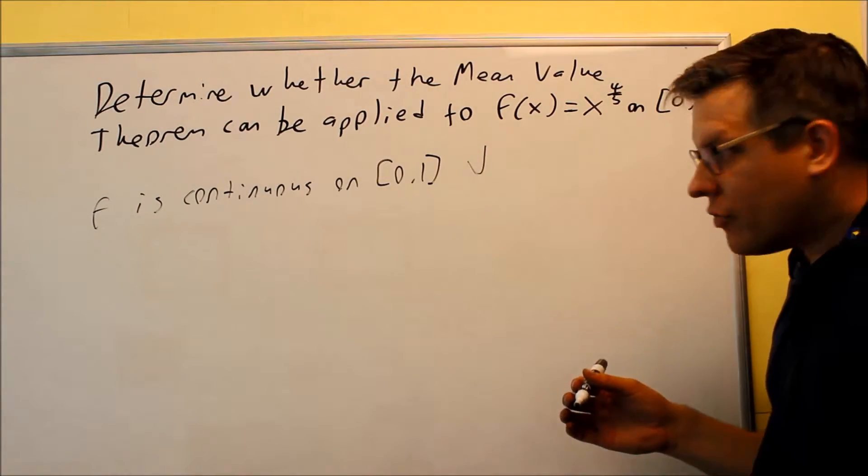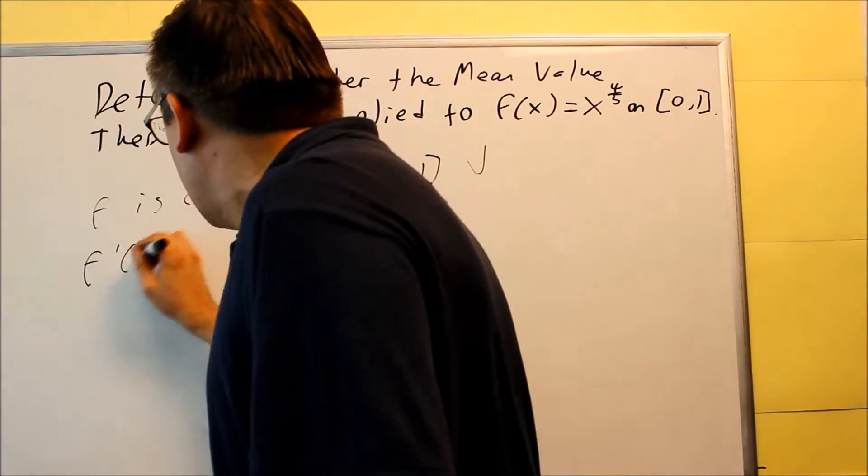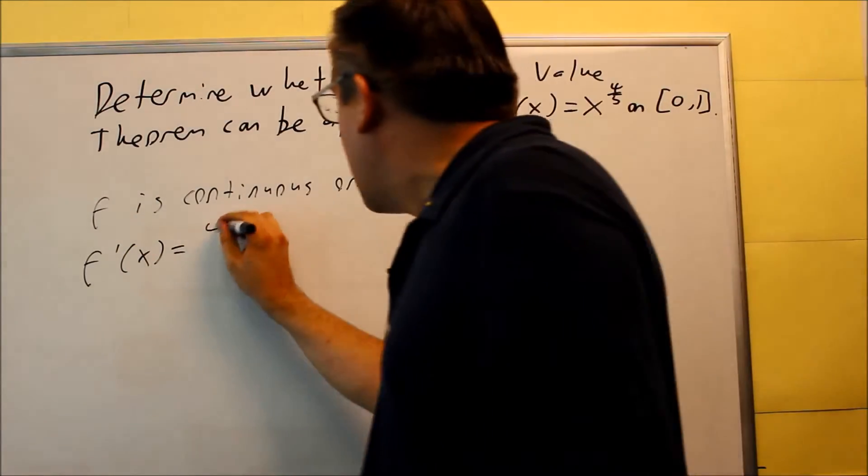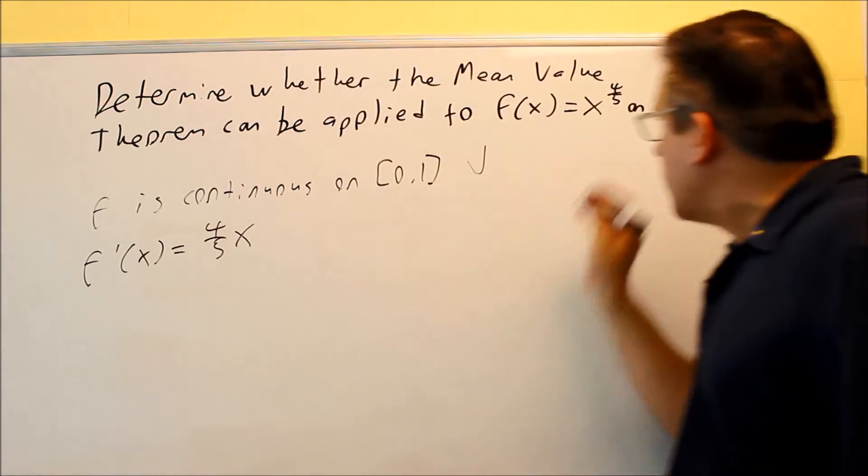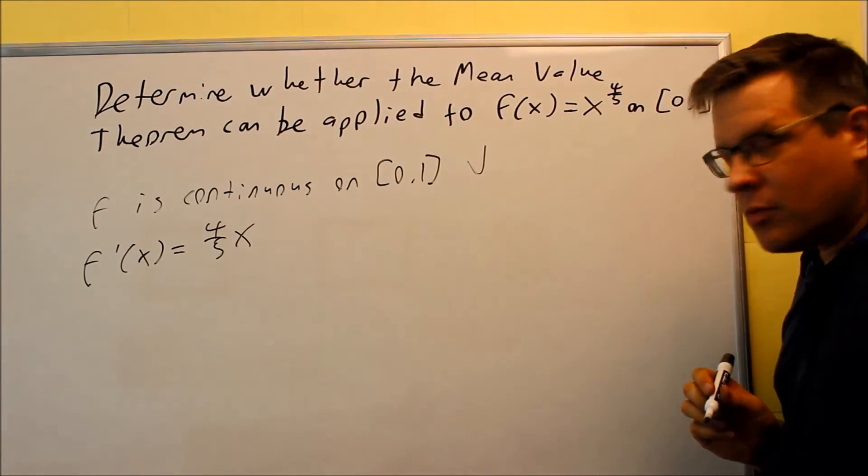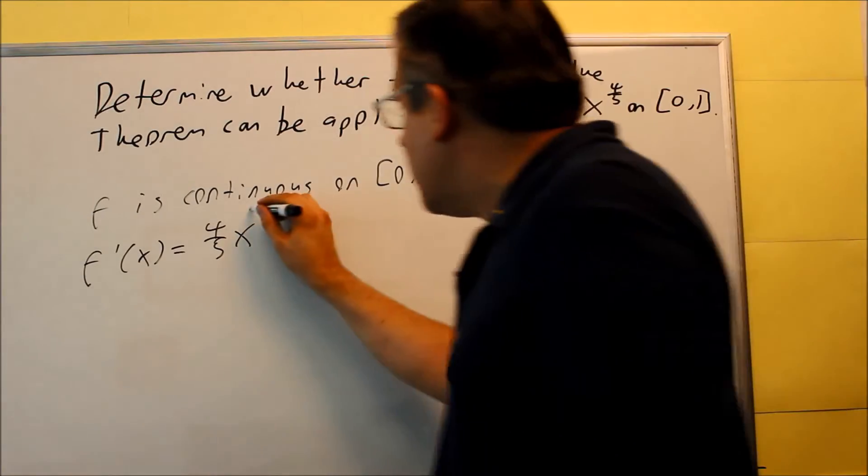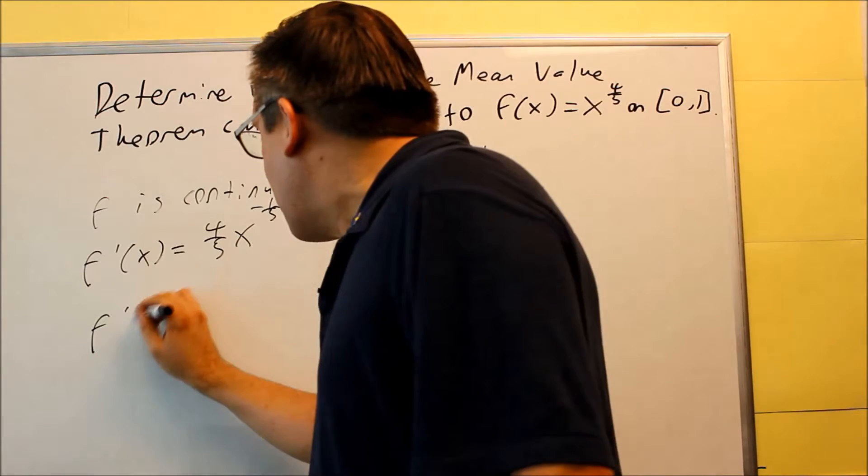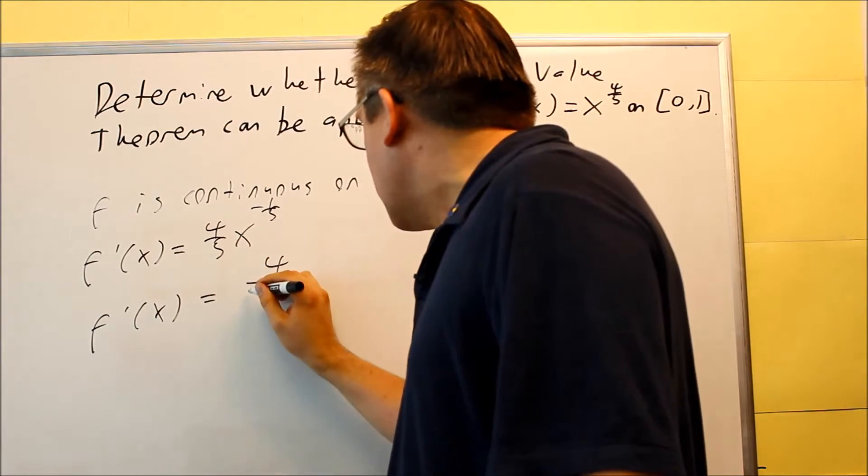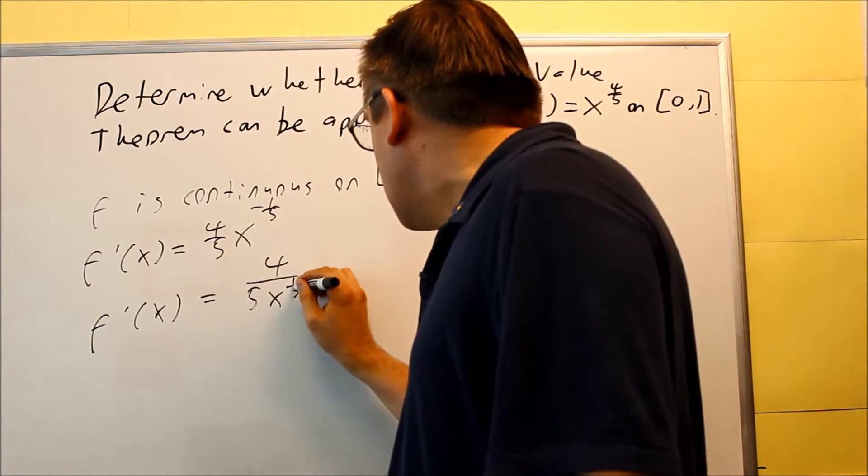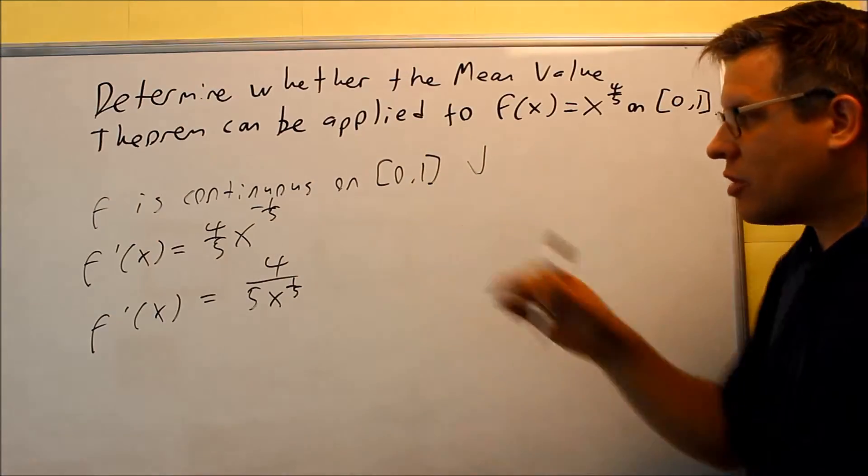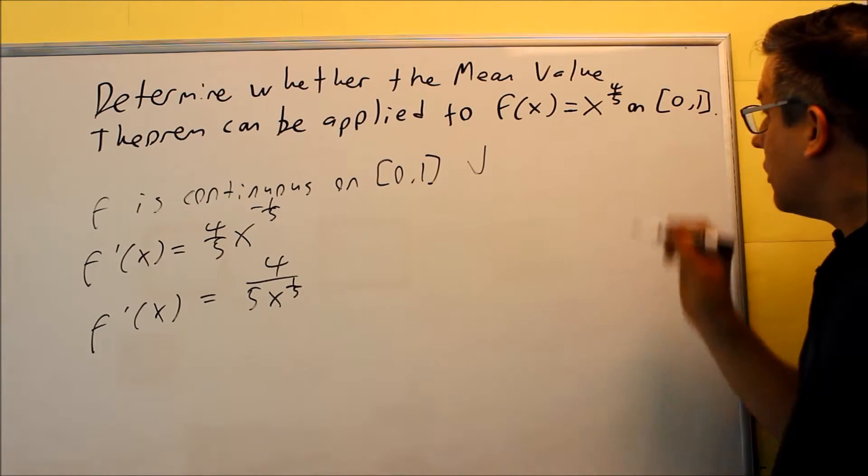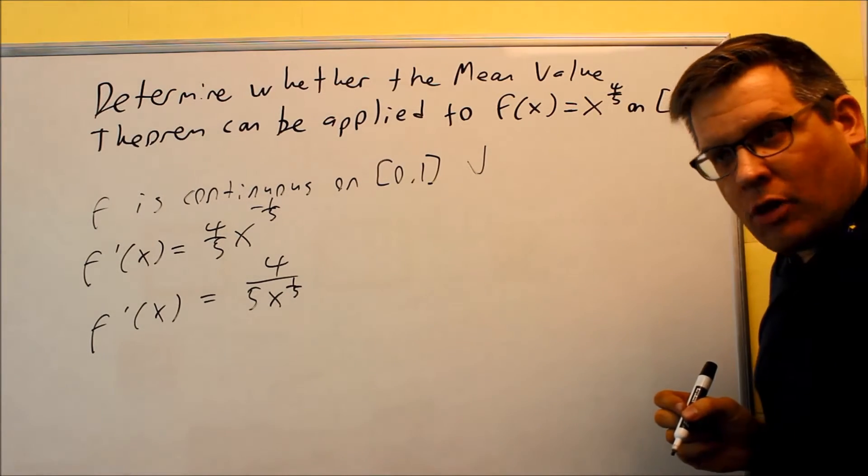Now the second one involves the derivative. So let's find the derivative. The derivative is going to involve the power rule. So 4/5 is going to come down. I have x. I'm going to subtract 1 from the exponent. 4/5 minus 5/5 will give us negative 1/5. And I can rewrite this. f'(x) is equal to 4 over 5x to the 1/5. So this is going to be my derivative function.